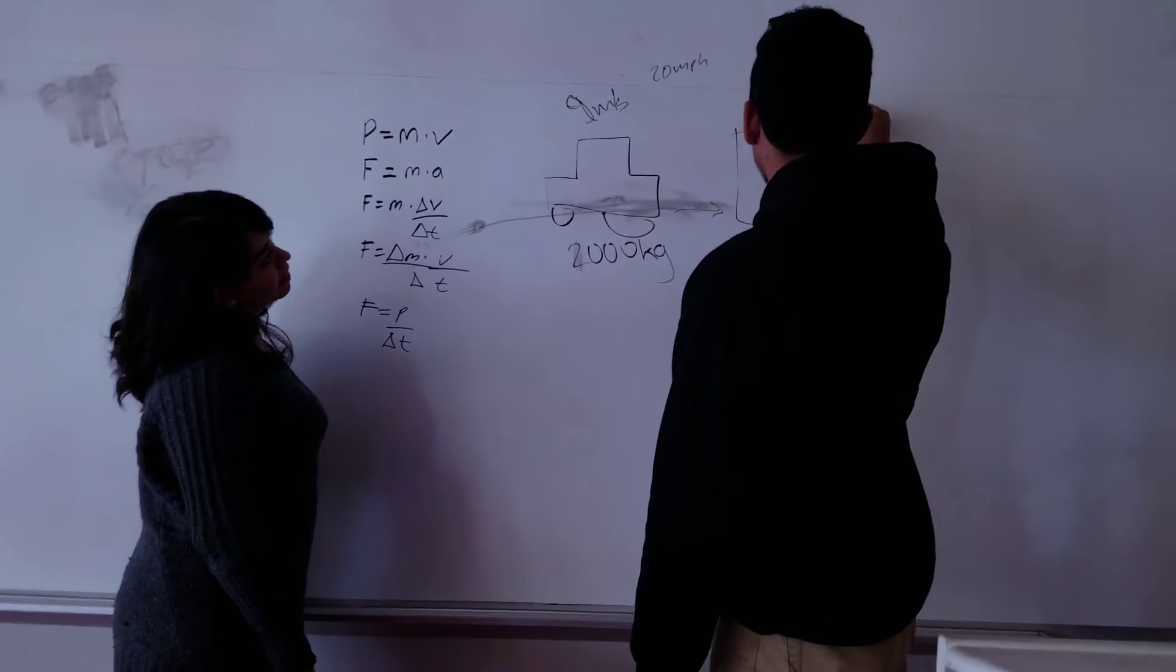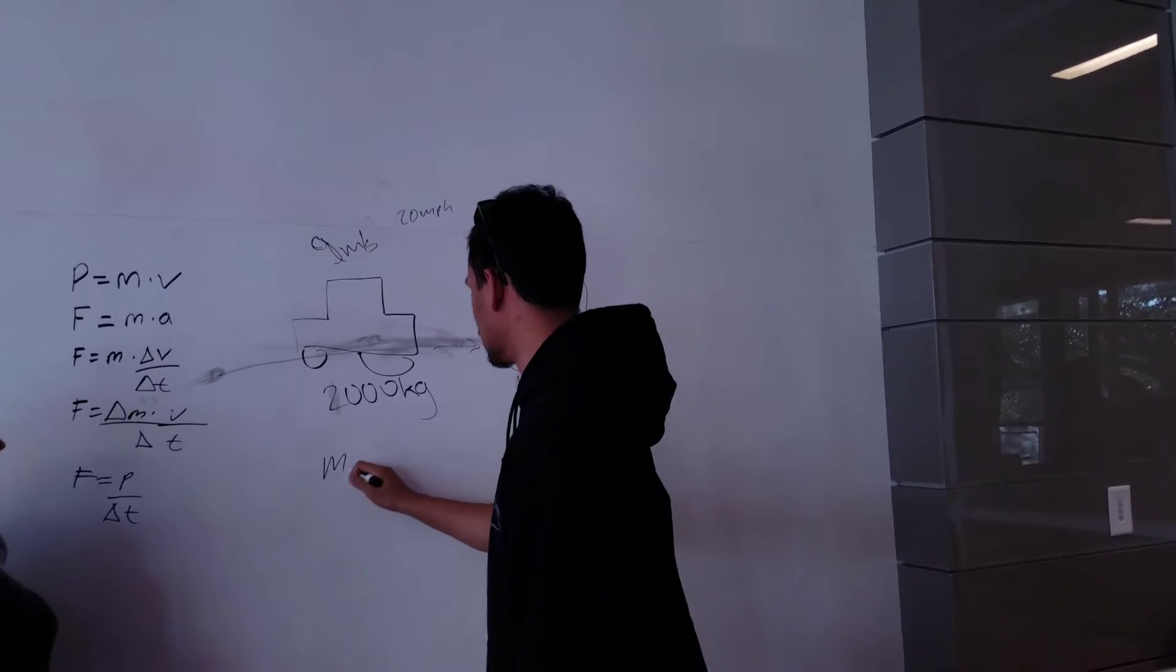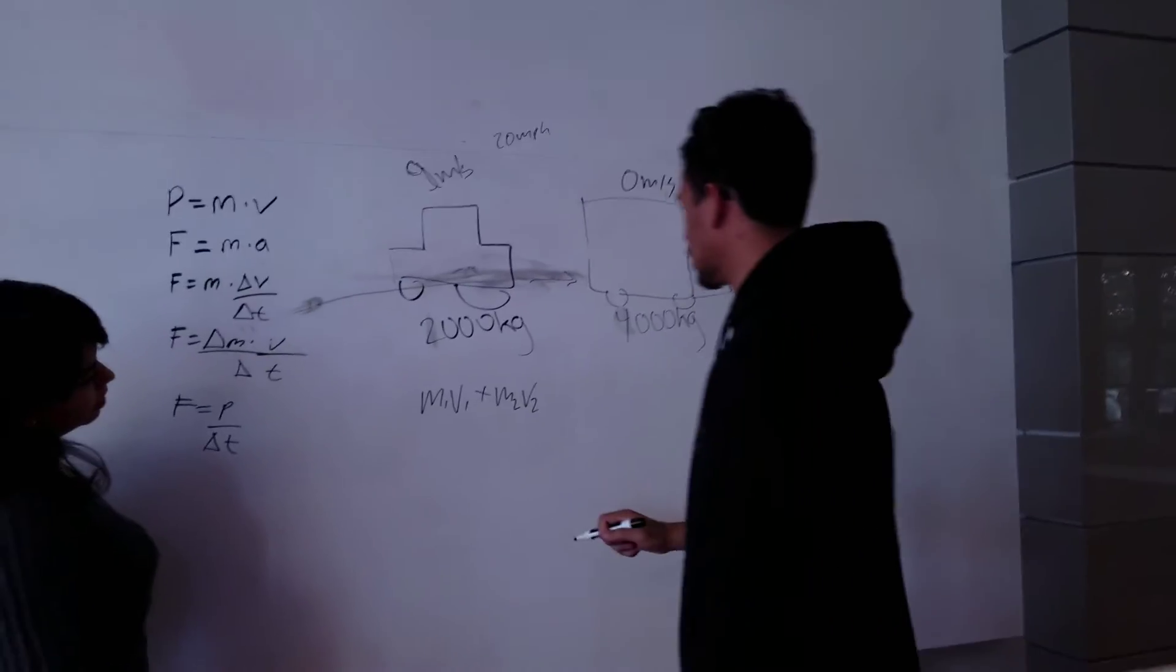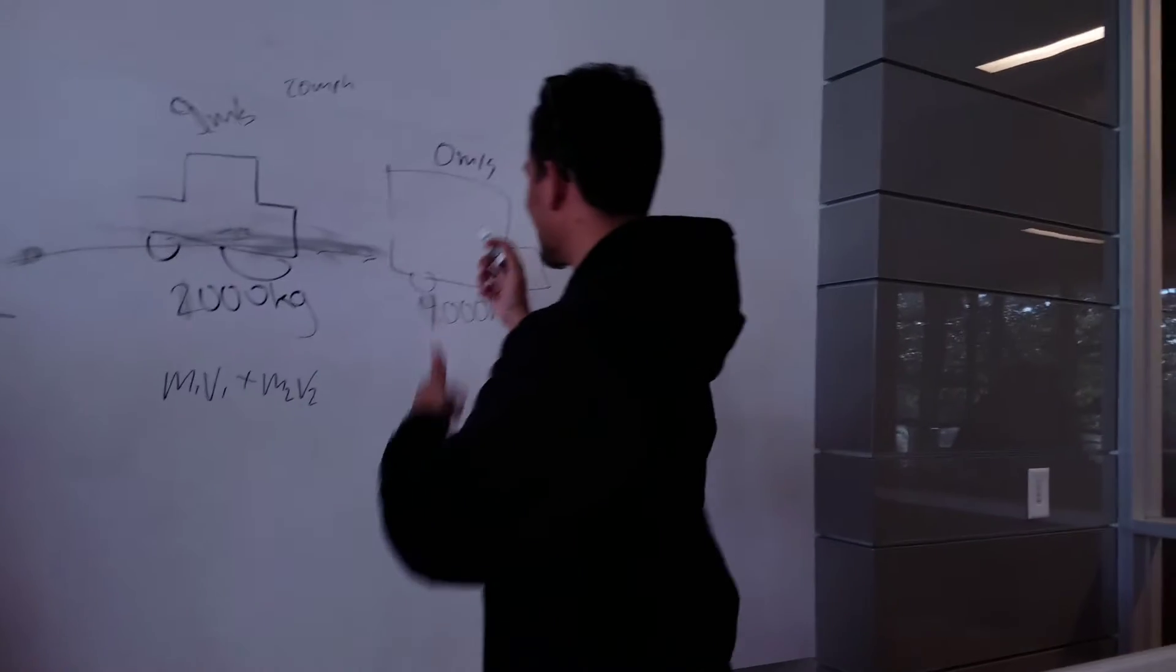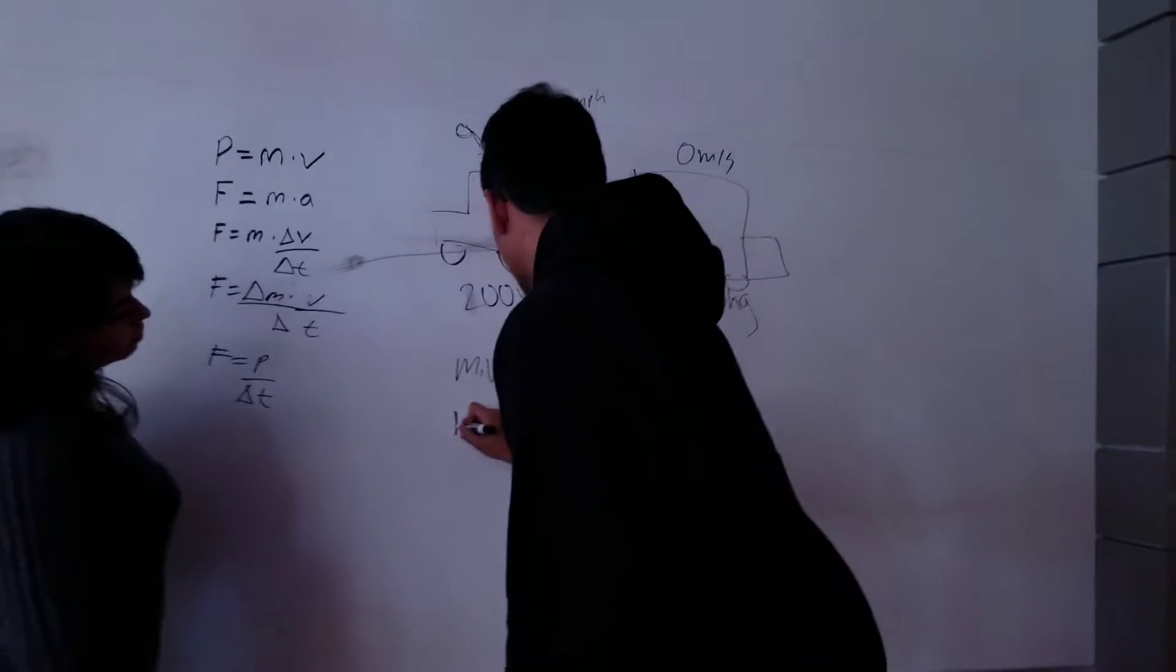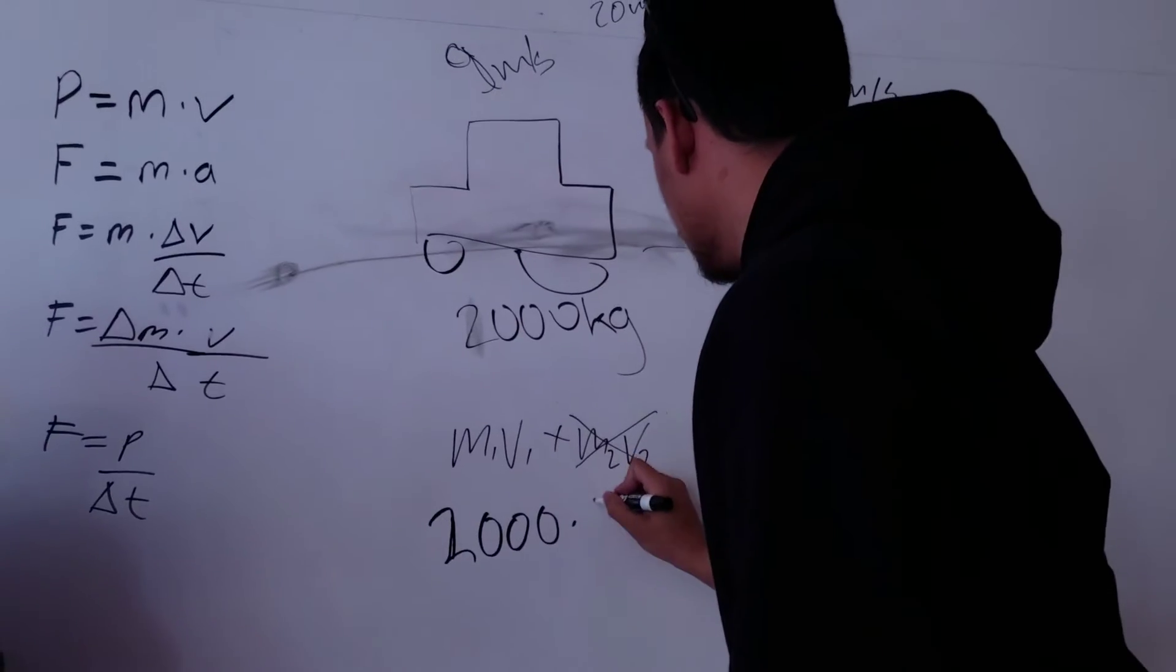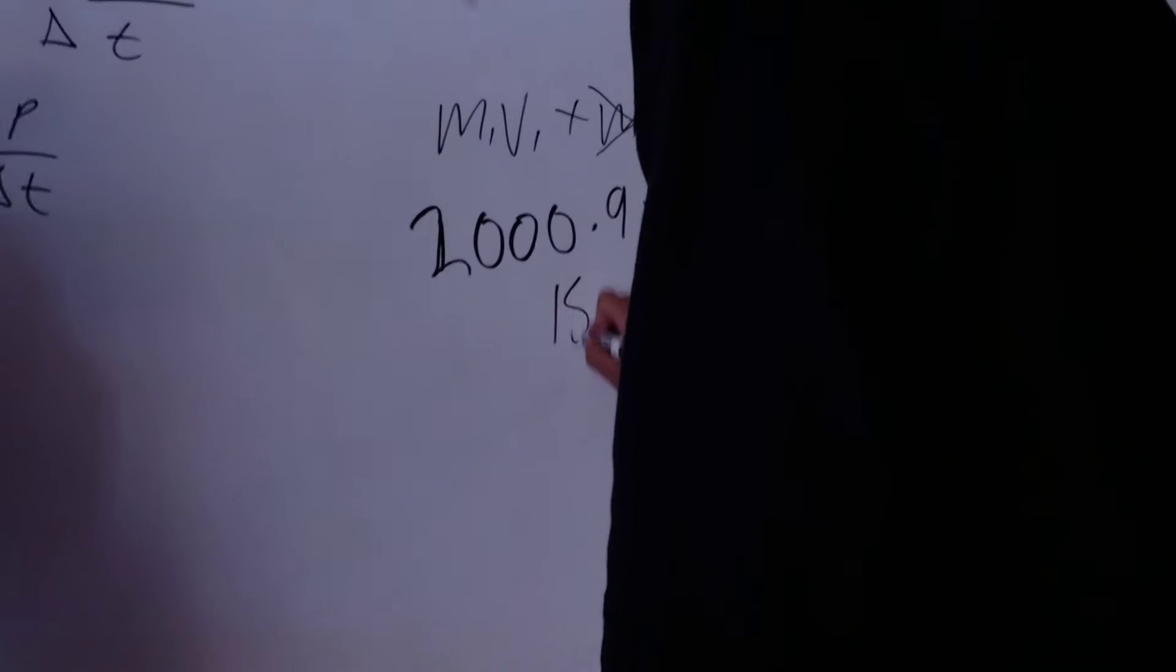Since this is 0 meters per second, we're going to find the momentum first, and the momentum is found by m1v1 plus m2v2. Because we know the velocity of number 2 is going to be 0, we know this is not a factor anymore, so we can just take the mass, which is 2,000, and times that by our velocity, which is 9 meters per second, which will get us 18,000.